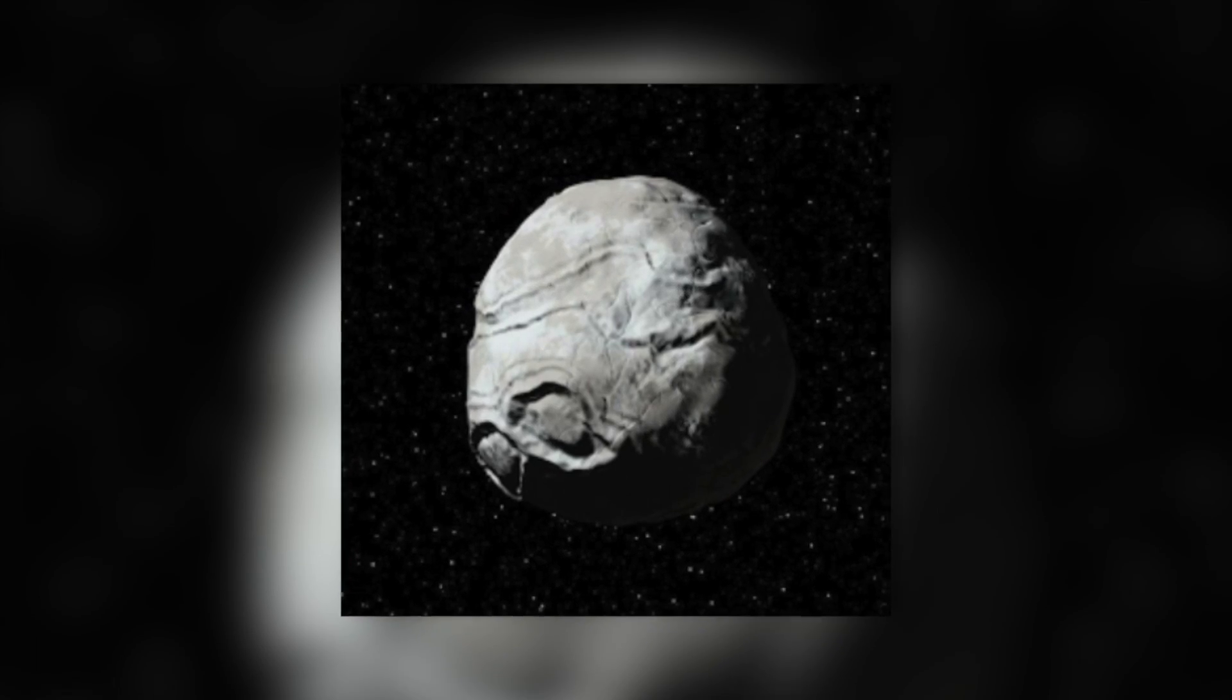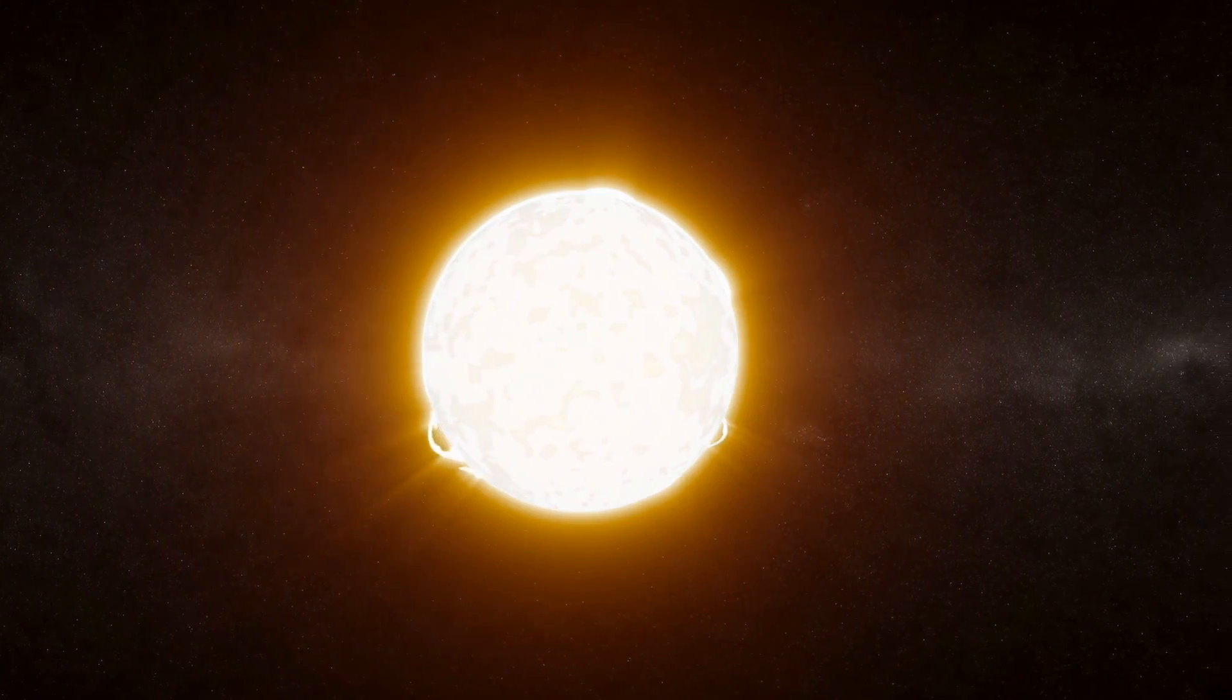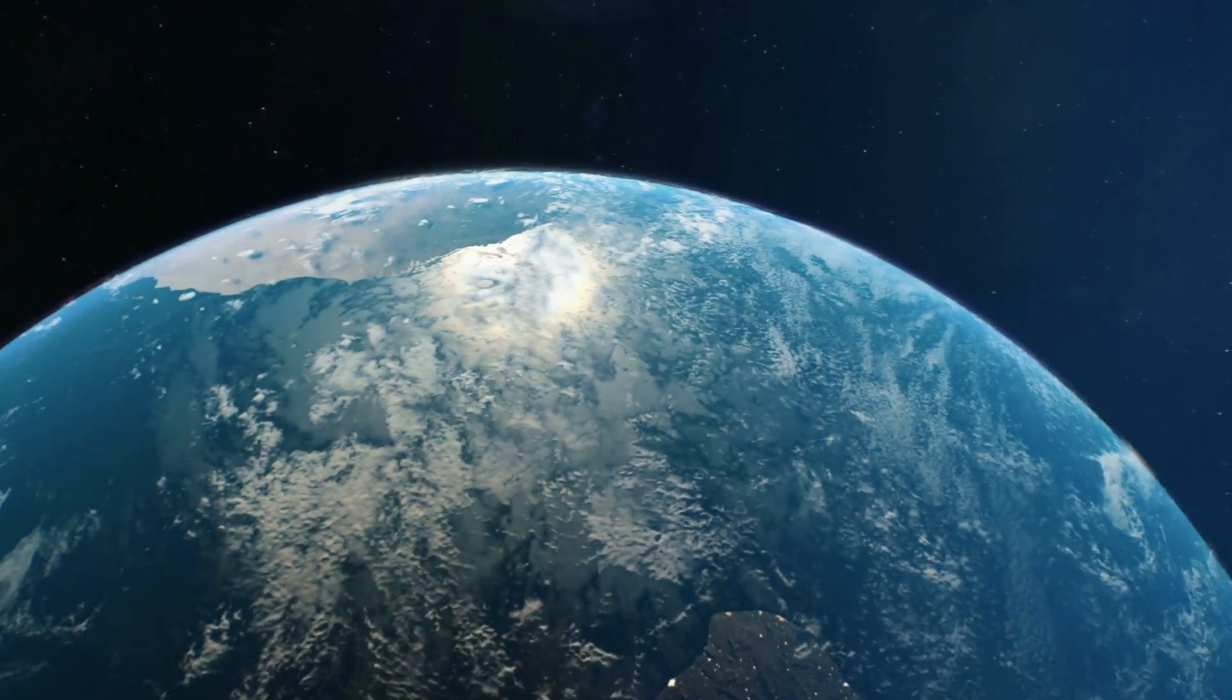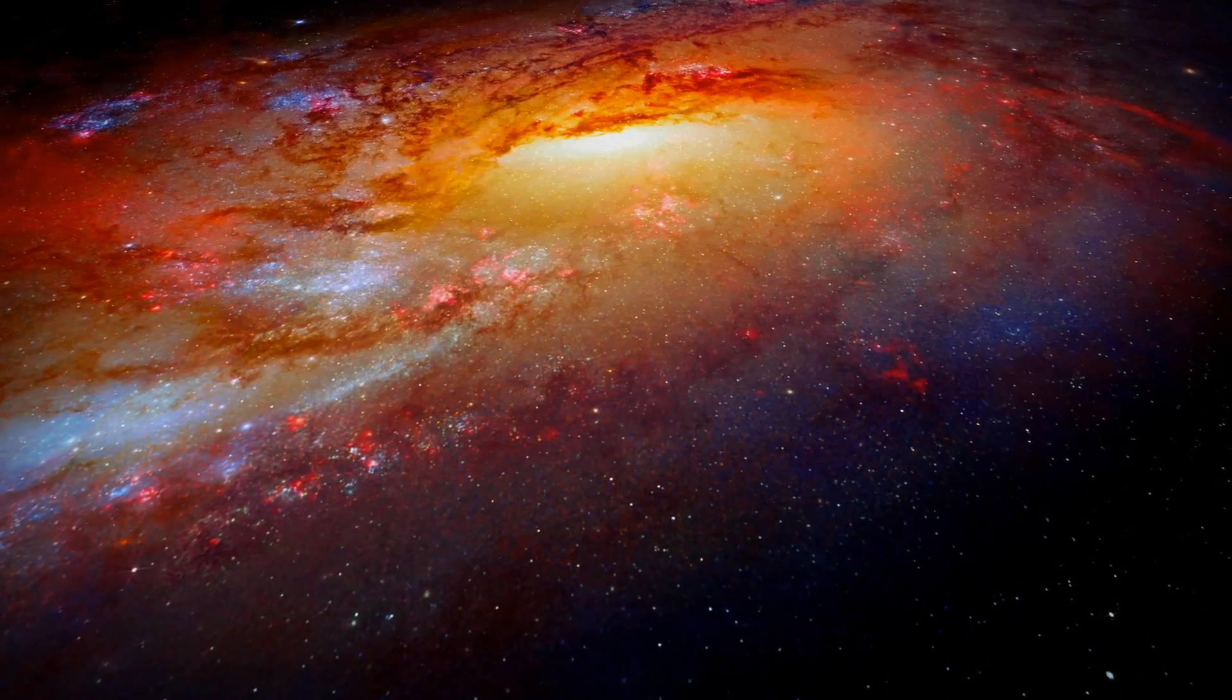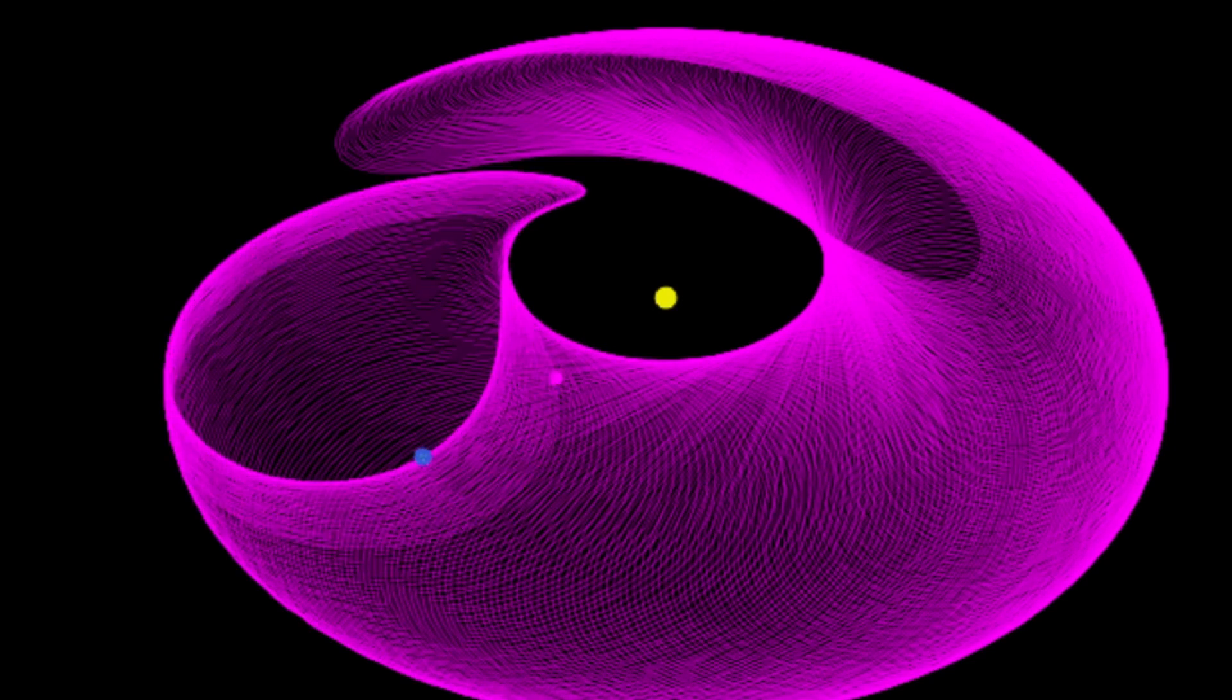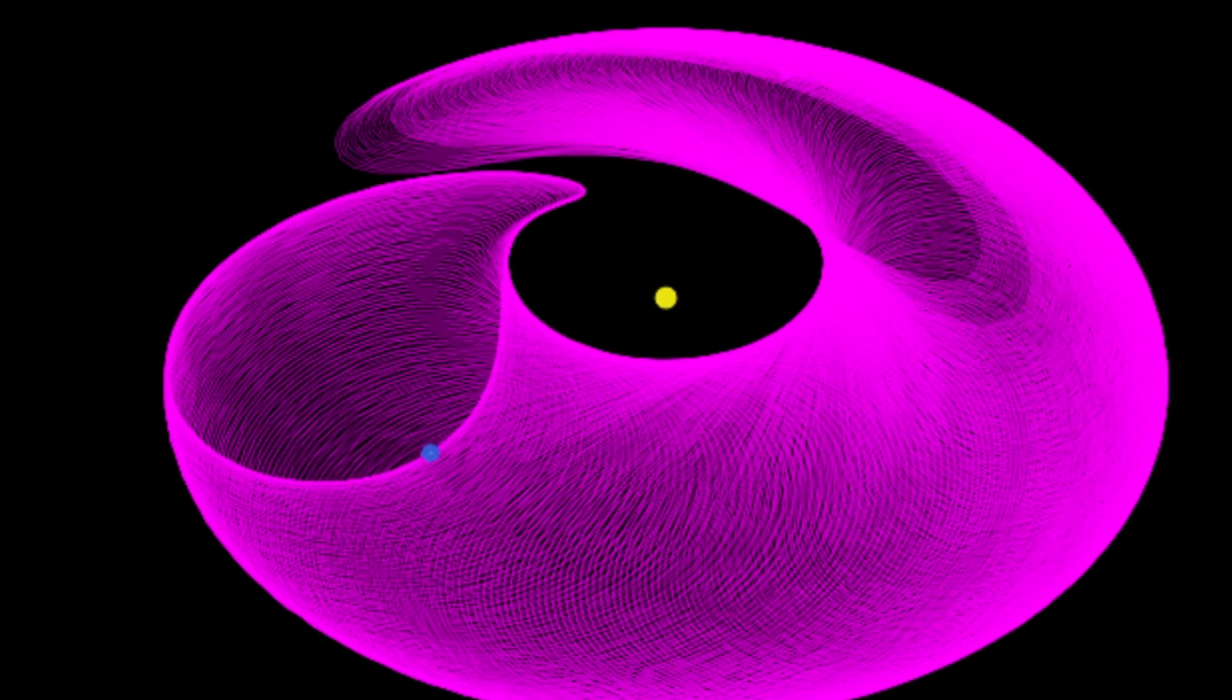The asteroid Cruithne was also called a second Moon. However, this is an object which orbits the Sun, whose orbit is only partially influenced by the Earth. Such co-orbital objects are extremely rare. Cruithne is the only one which, thanks to its orbital period of almost exactly one year, has been mistakenly called a second Moon.